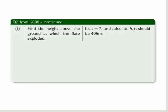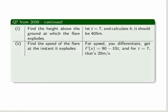Find the height above ground at which it explodes. Well, at t equal to 7, that's when it explodes, so you calculate h for that, and you get 405 metres. Find the speed of the flare at the instant it explodes. Speed means differentiation, so you have to differentiate, and you should get 90 minus 10 multiplied by t. And for t equal to 7, that equals 20 metres per second.